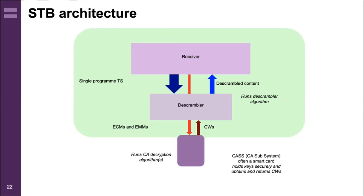Looking at set-top box architecture: from the receiver we strip out a single-program transport stream. In the multiplex there will be a number of transport streams — historically often eight or more on a satellite link. The single-program transport stream is taken to the de-scrambler, which is loaded with the control words needed to decrypt the content, runs the de-scrambler algorithm, and delivers the decrypted content back to the receiver for display on the television. The conditional access subsystem — often a smart card — runs the CA decryption algorithm to decrypt ECMs and EMMs, holds keys securely, and returns the control words to the rest of the set-top box.